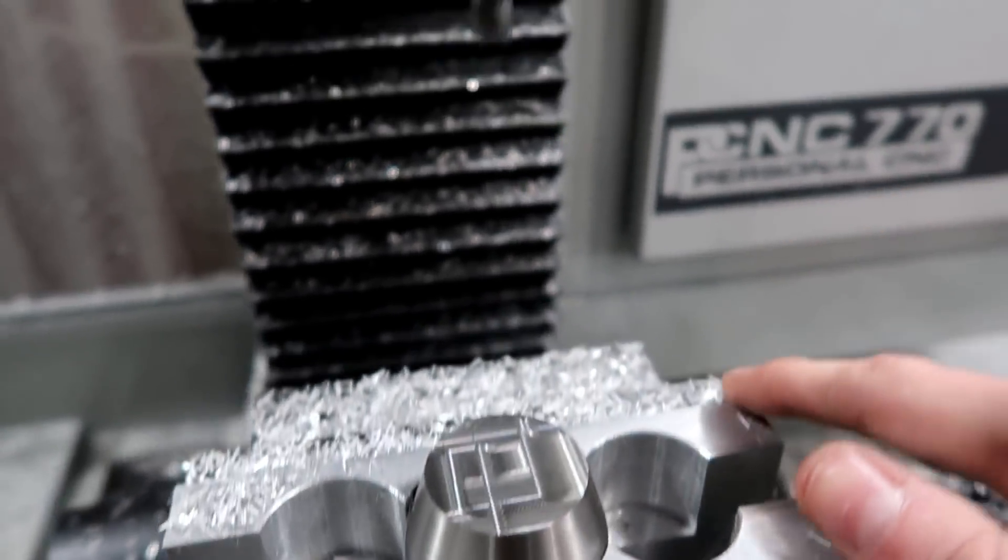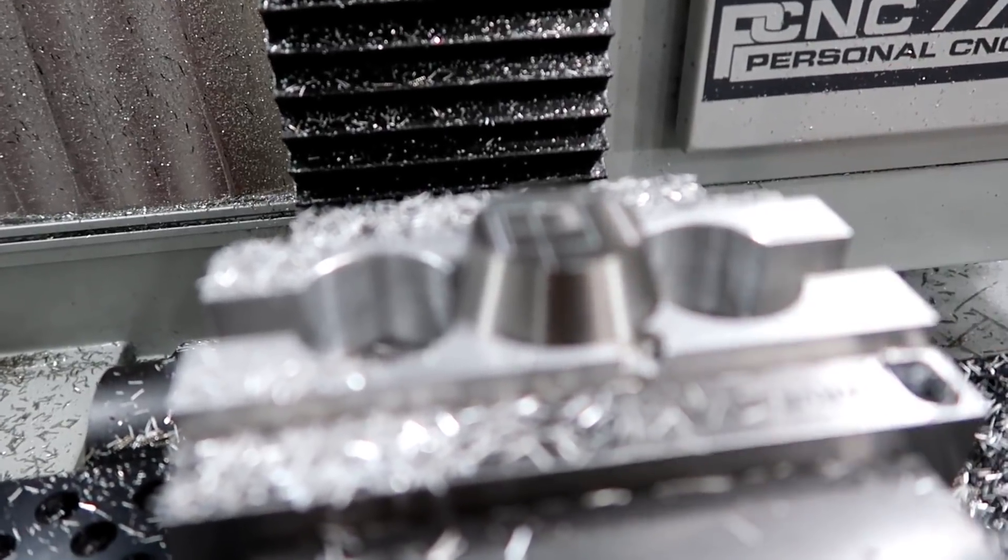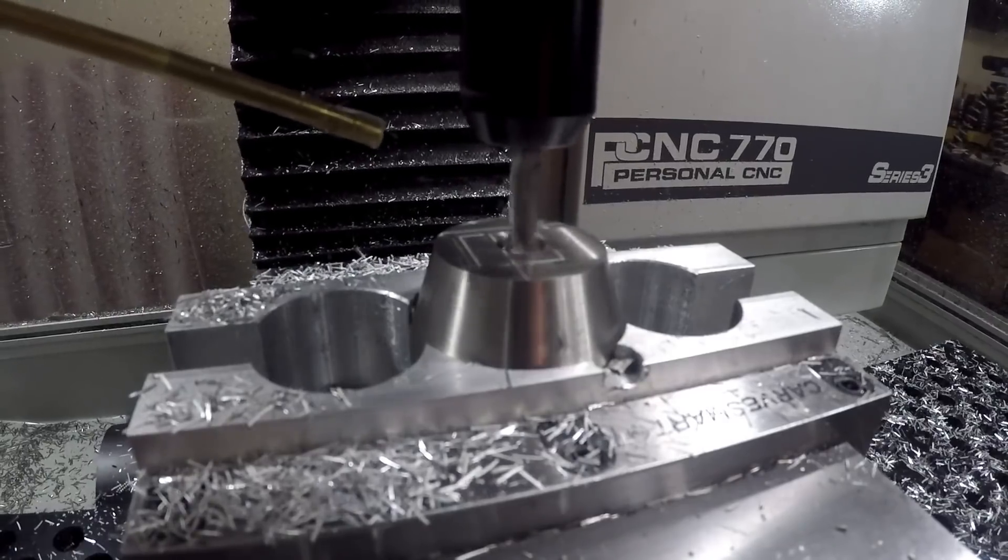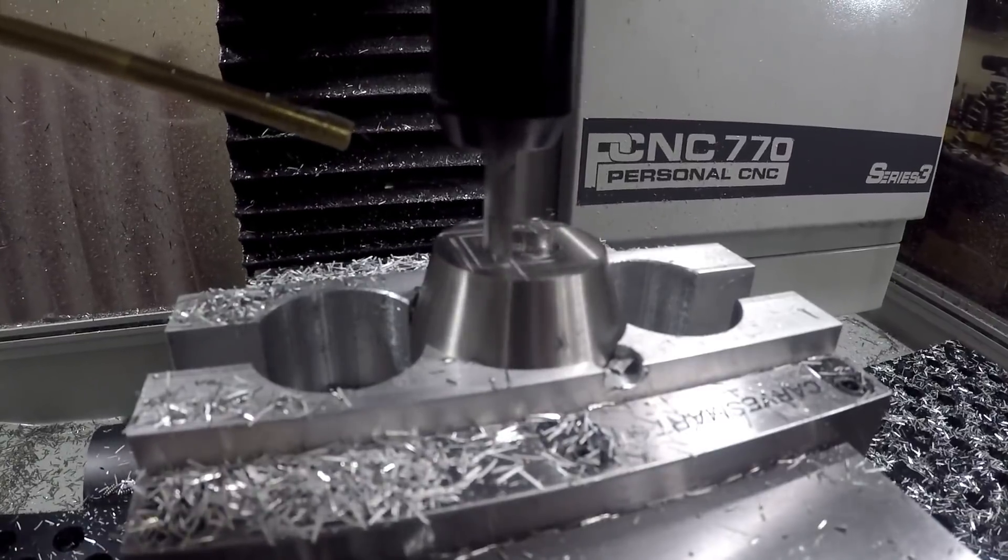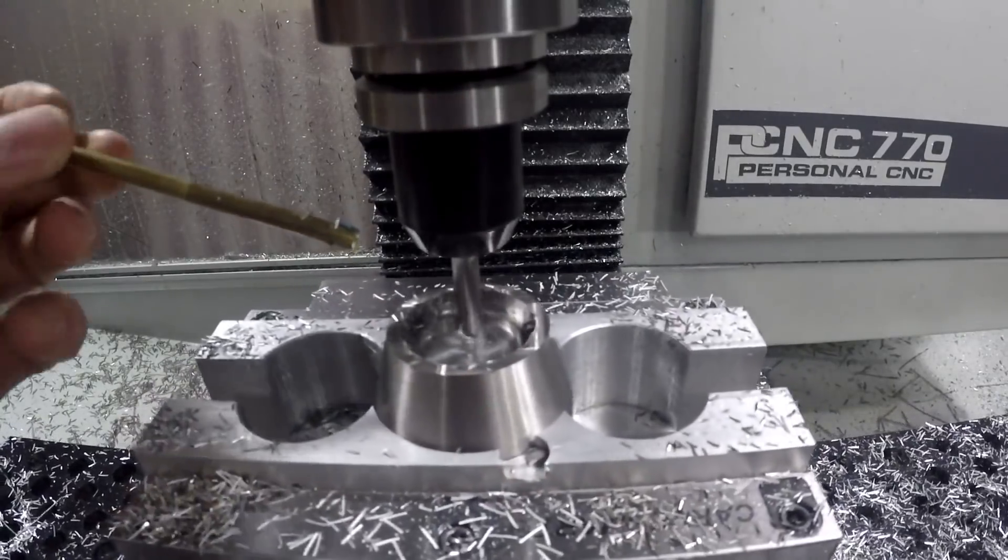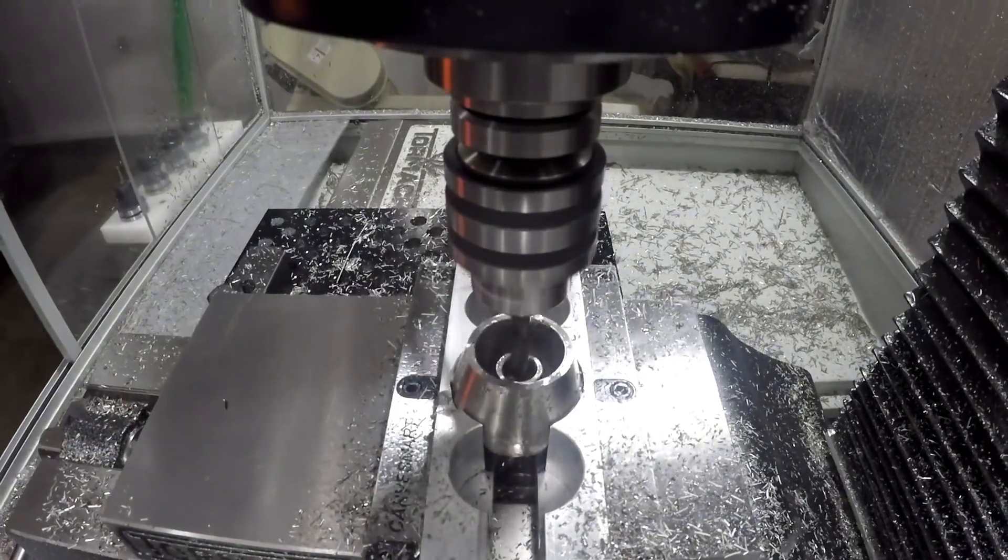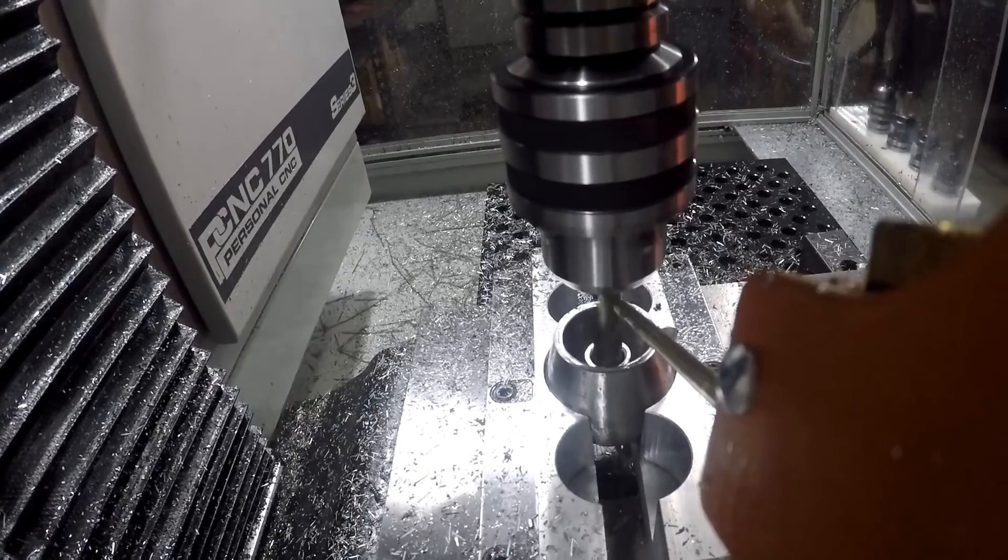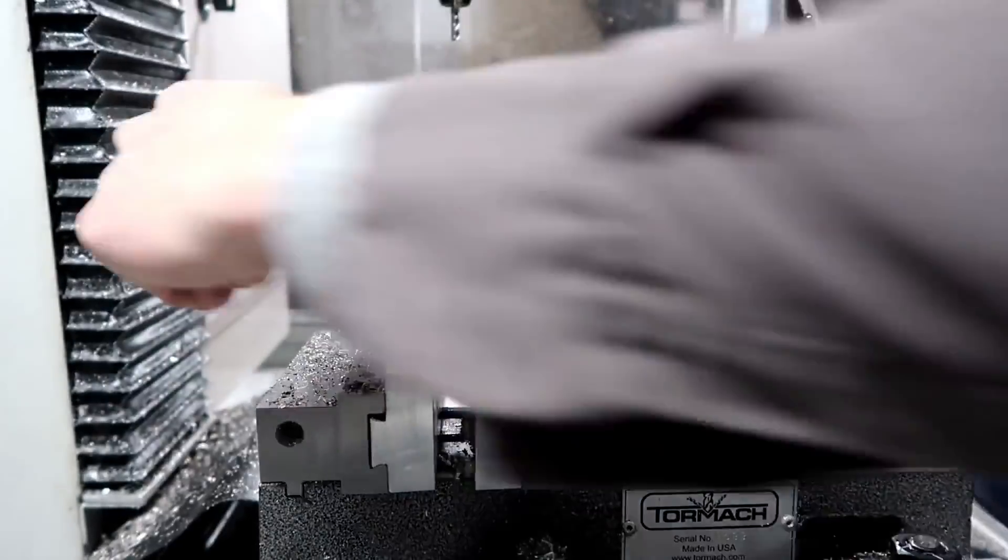I got everything faced off and I'm getting ready to start the program with this quarter inch flat end mill. Getting ready to pocket this out. I have it on the low setting - only running about 2500 RPM and making very light cuts.